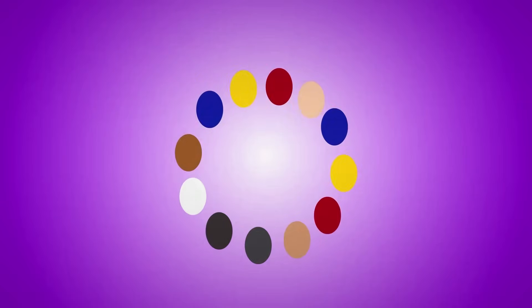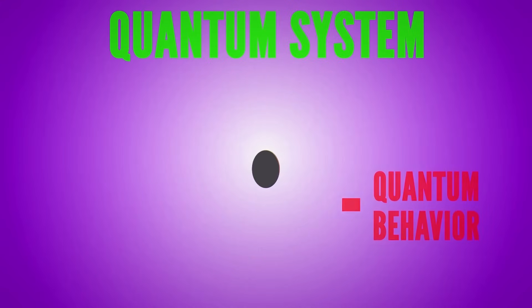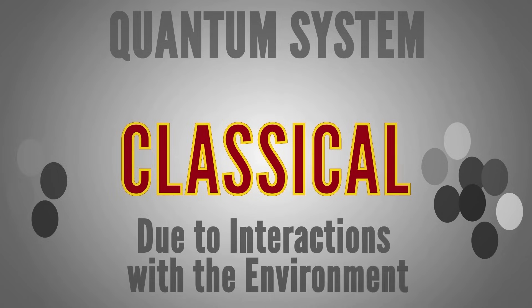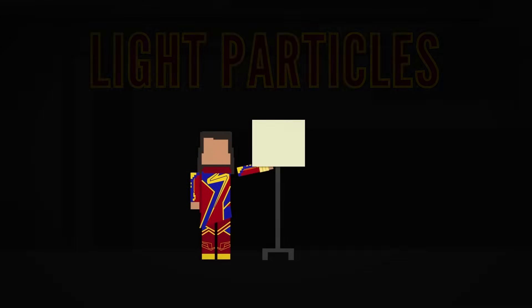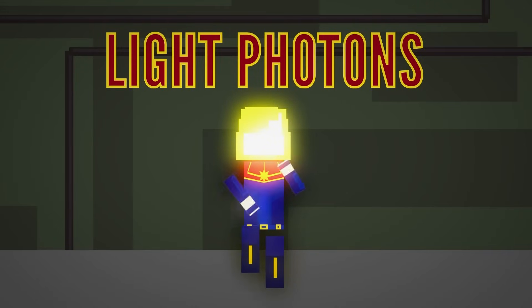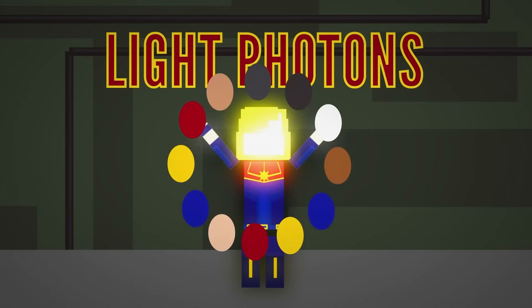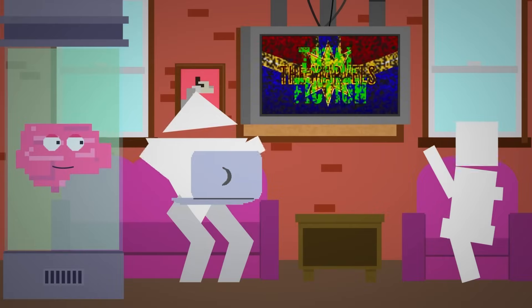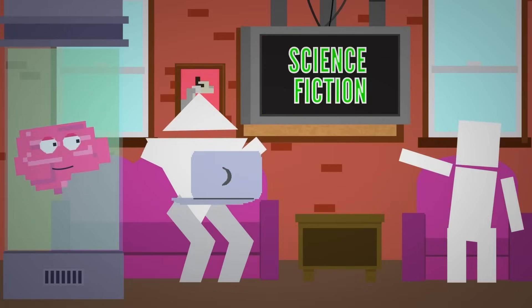Quantum decoherence is the process by which a quantum system loses its quantum behavior and becomes classical due to interactions with its environment. But the Marvels actually use light-based powers and light particles, aka photons, which are one of the few particles humans have actually managed to entangle. So it's not total fiction, it's more like science fiction.